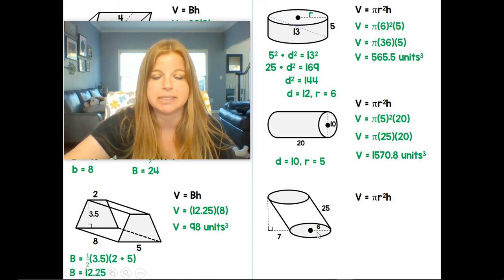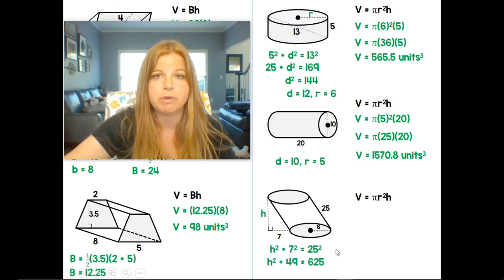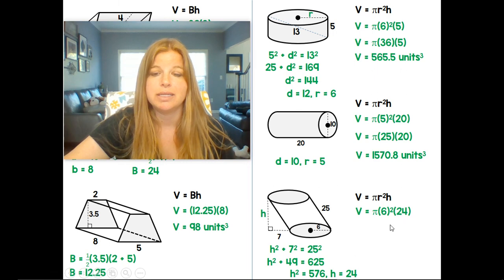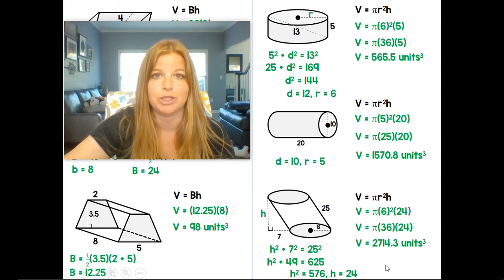I know my radius is 6. So here I have 7 squared plus b squared equals 25 squared. To figure out that height, if I end up doing my math, I end up getting a height of 24. So I know my radius is 6. My height is 24. 6 squared is 36. Multiply that all out. And we get 2714.3 units cubed.